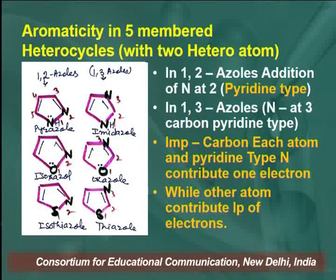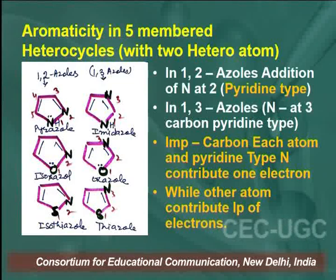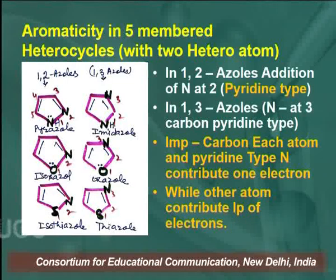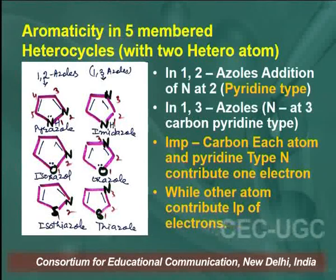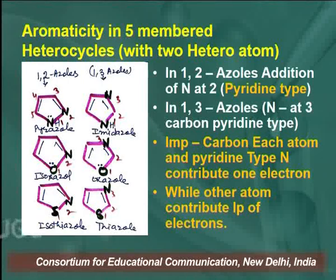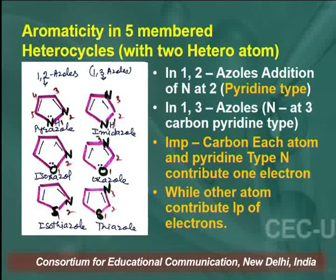In 1,3-azoles, when two nitrogens are at the 1 and 3 positions, it is imidazole. Imidazole contains two nitrogen atoms in a 5-membered heterocyclic ring — one at position 1 and the other at position 3. In oxazole, there is oxygen and nitrogen. In thiazole, sulfur is at position 1 and nitrogen is at position 3. These are the 1,2-azoles and 1,3-azoles.